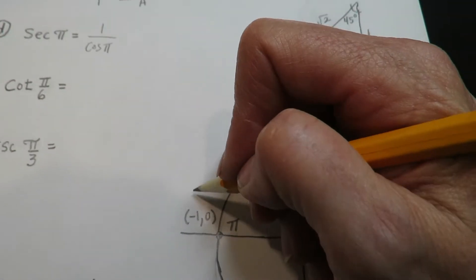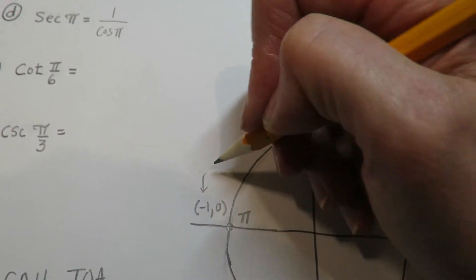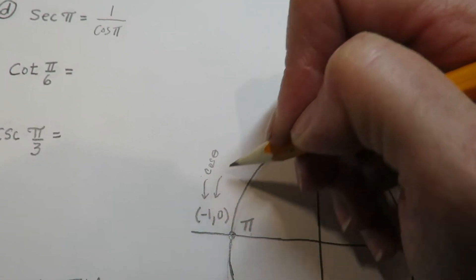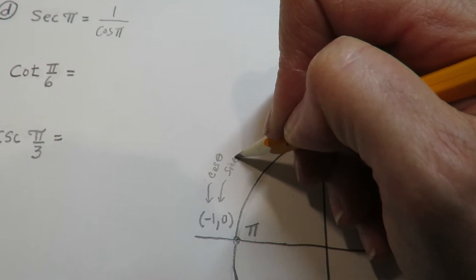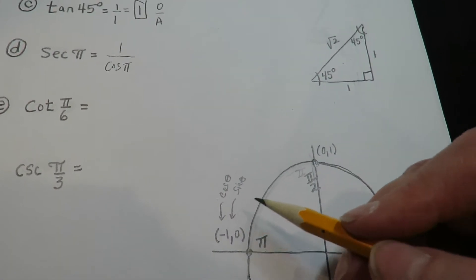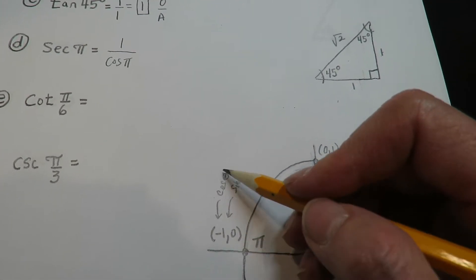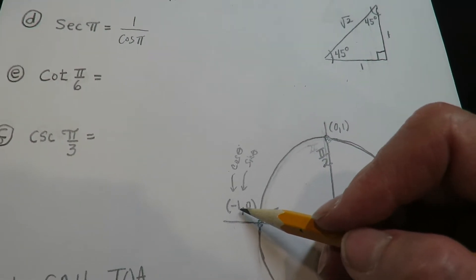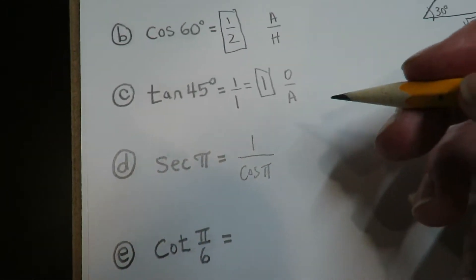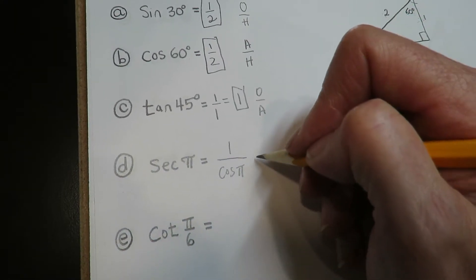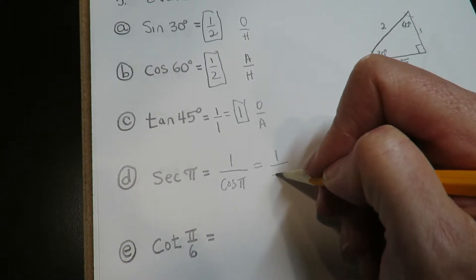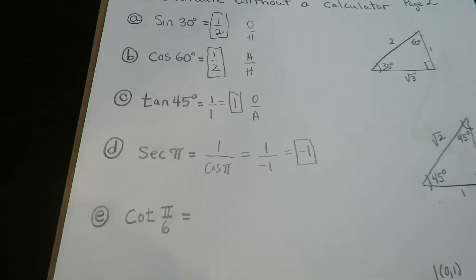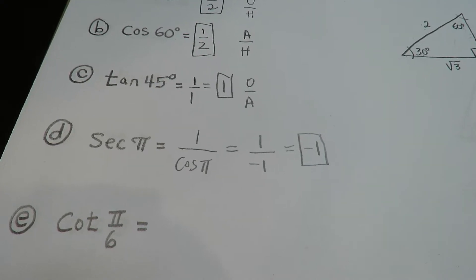Now I can use the unit circle because I know the cosine of pi. I come over here to pi. Remember, the first value — what we consider the x — is always the cosine output. The second value is the output of the sine. So at pi, the cosine of pi is negative one, and the sine of pi is zero. The value I'm looking for is negative one, so we get one over negative one, which means the answer is negative one.